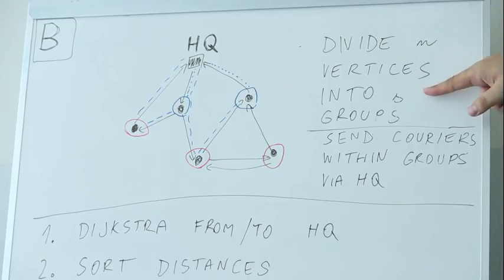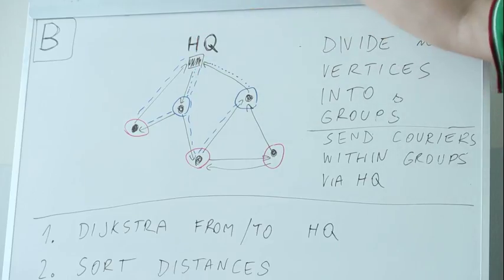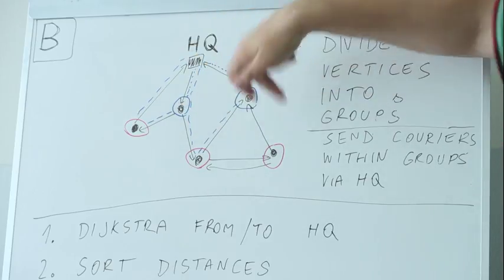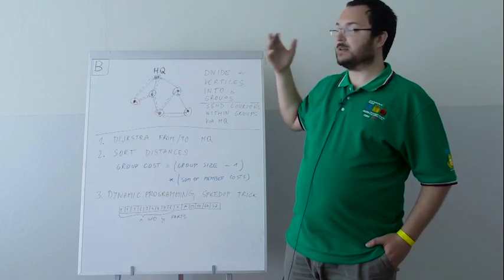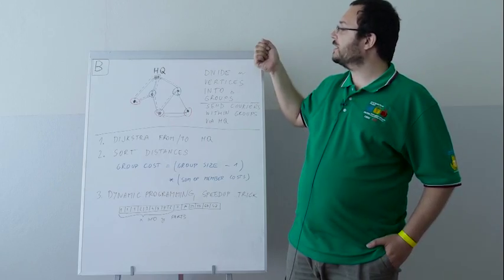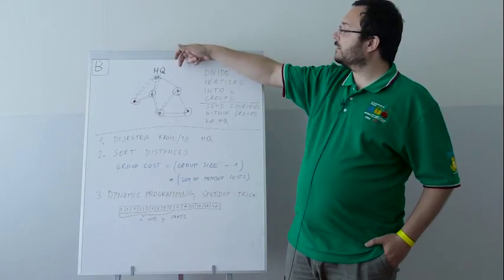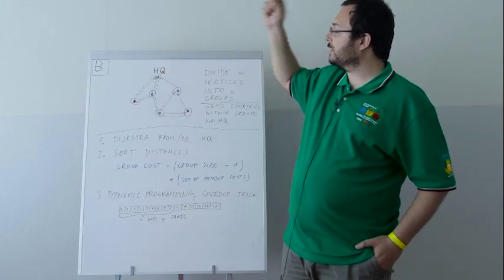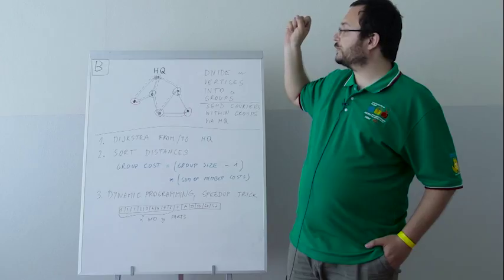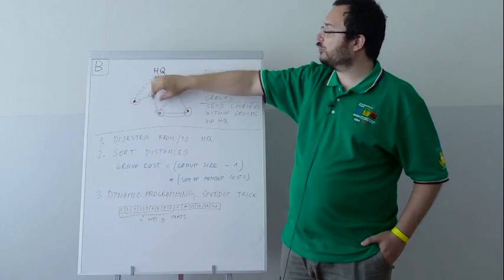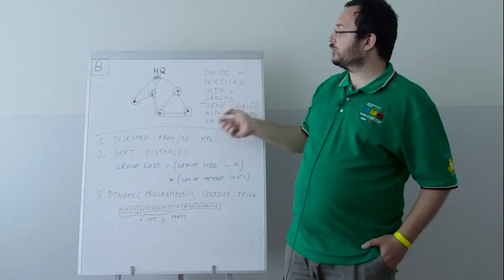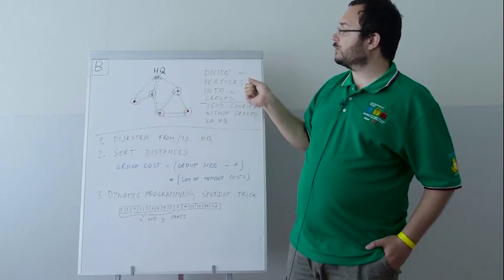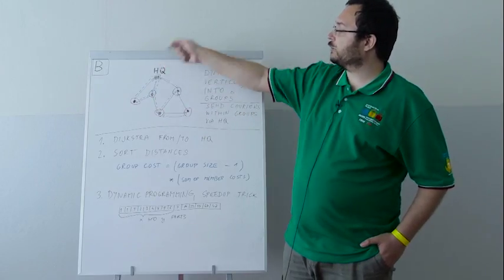We are given a number S, the number of groups, and we have to divide the vertices into groups. For example, in this picture there is a blue group and a red group. The group sizes can be arbitrarily chosen. After we divide those vertices into groups, within each group, each vertex needs to send a message to each other vertex, and those messages have to travel via headquarters.